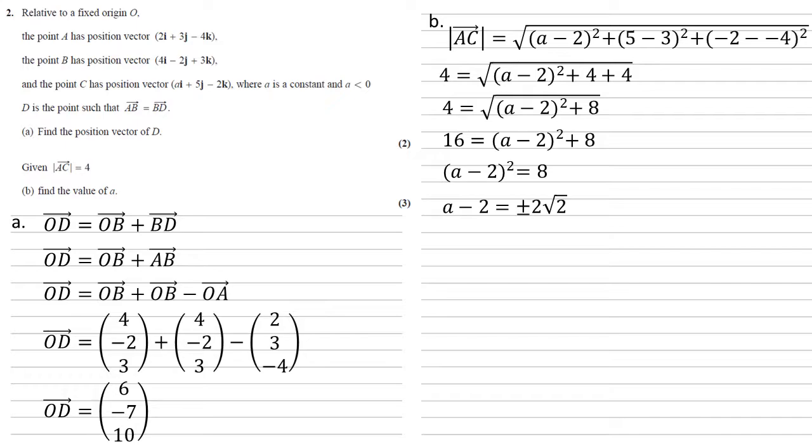a minus 2 equals plus or minus 2√2 by square rooting both sides. So a equals 2 plus or minus 2√2. But we're told in the question that a is smaller than 0.